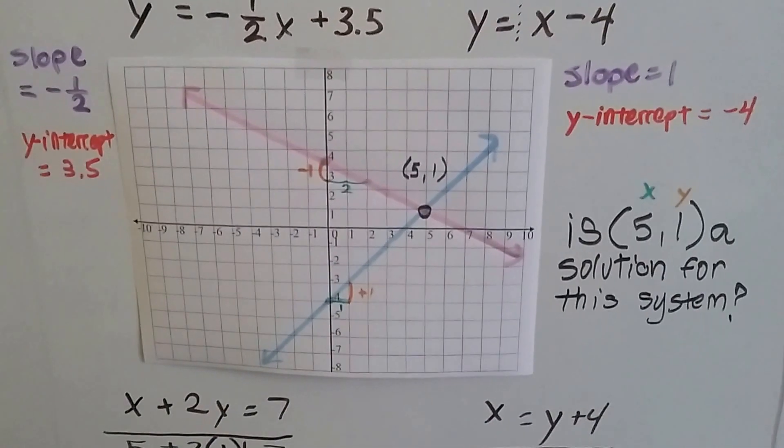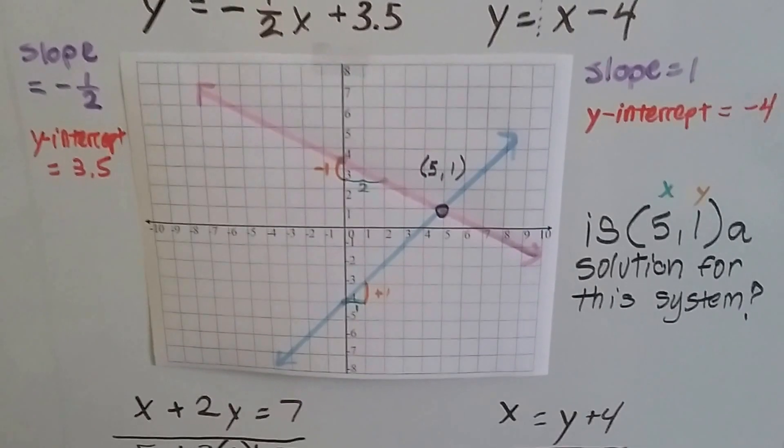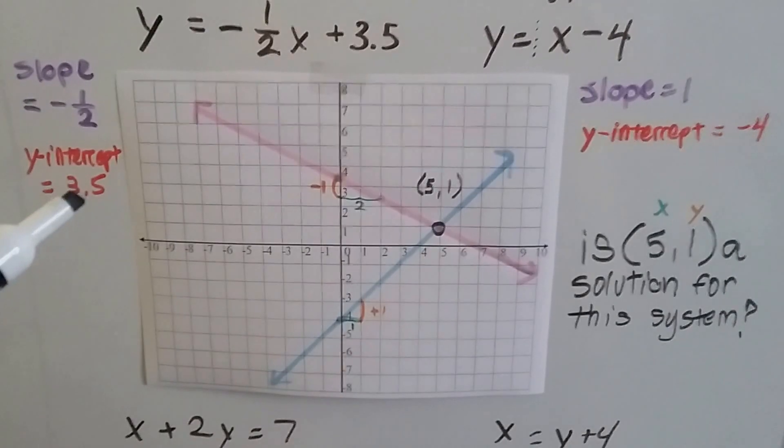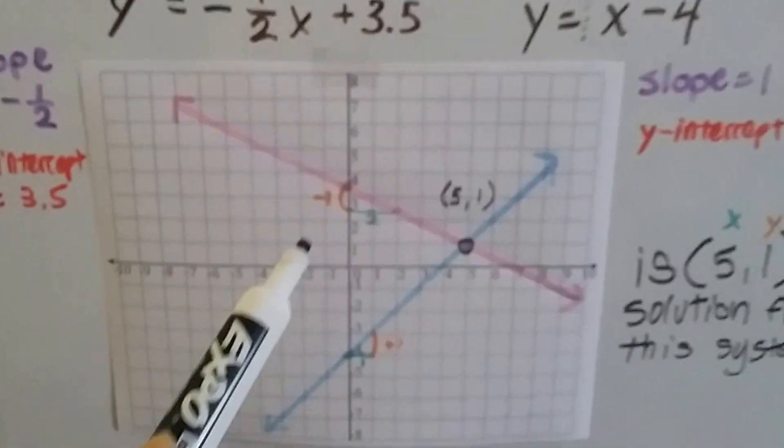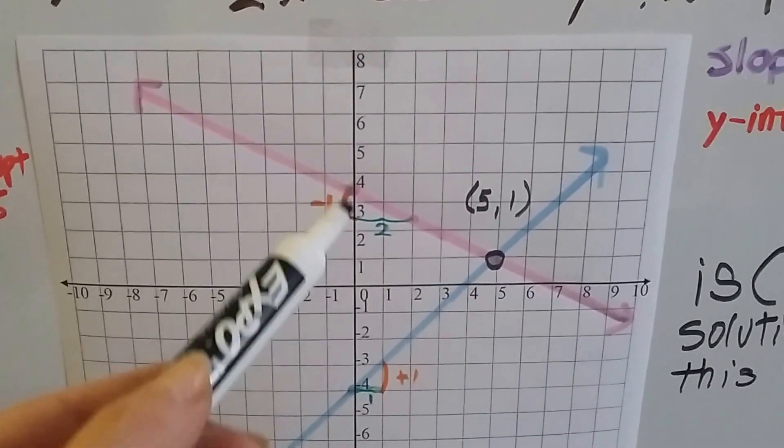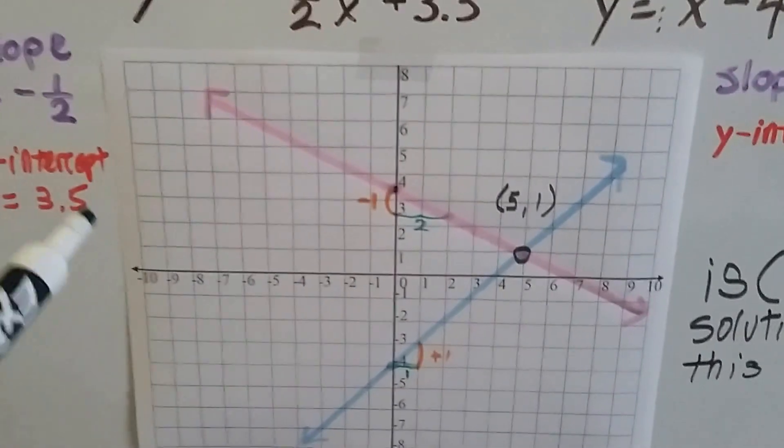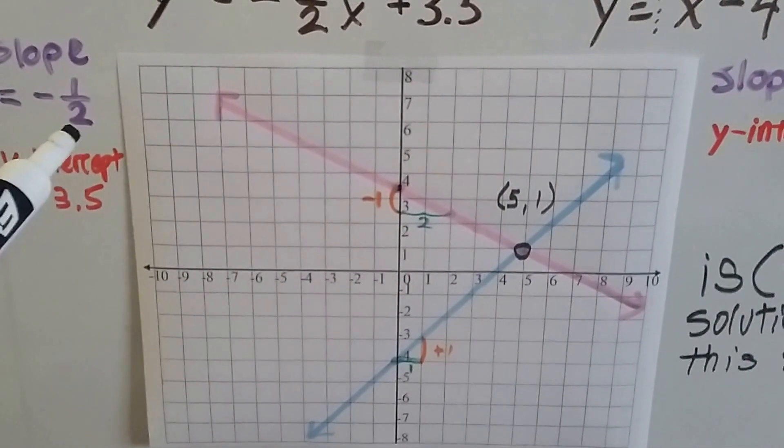And we draw the lines, we graph them. So to have a negative half slope with a y-intercept at 3.5, so here's 3.5 in between the 3 and the 4. It's right here. And it's got a negative 1 over 2 slope.